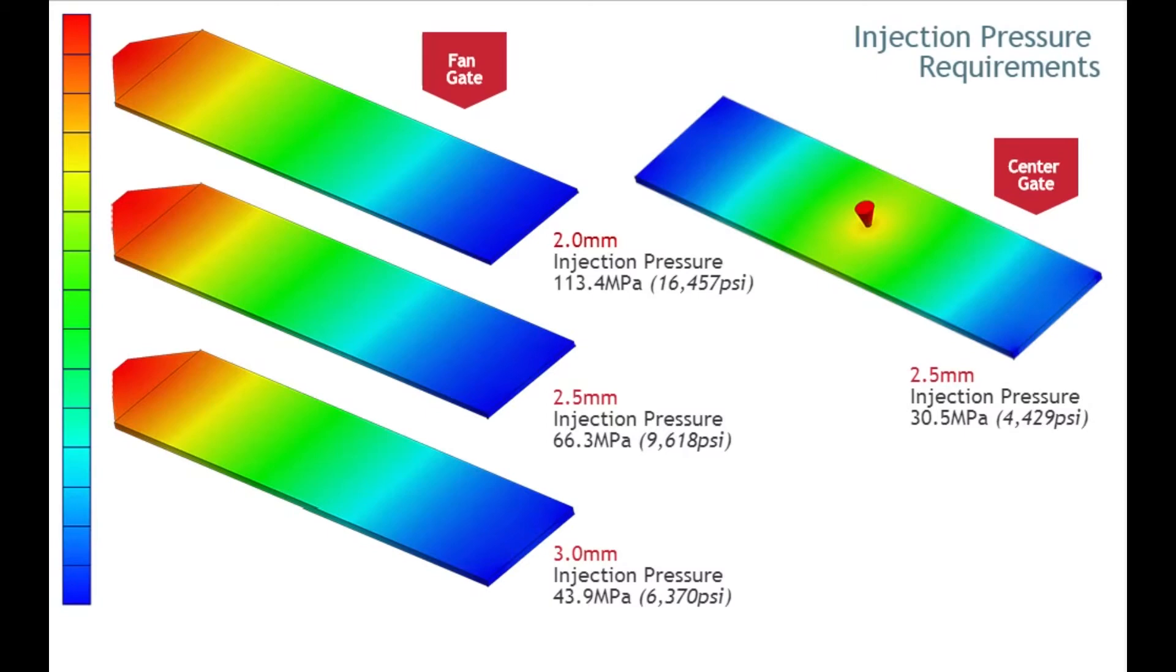Looking at our four examples in order, you can see that the pressure decreases as the wall gets thicker and decreases even more with the center gate. Since plastic flows more easily in the parts with thicker walls, less pressure is required. The same is true for the center gated part, which we will discuss in more detail later in this lesson.